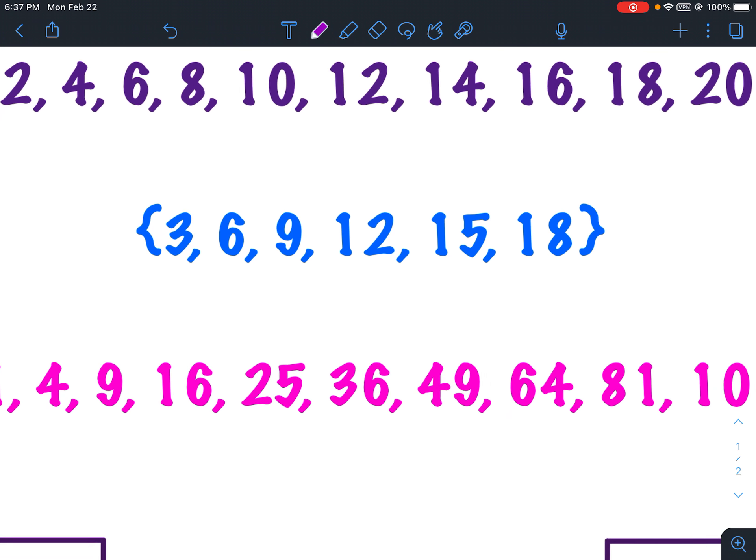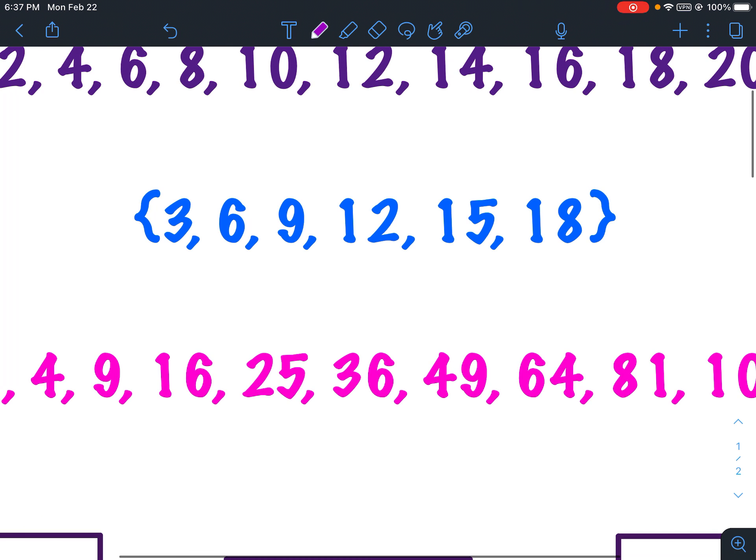Let's look at the next example of a set. We've got 3, 6, 9, 12, 15, 18. That is a set of your multiples of 3 up to 18. Again, that is their set of multiples of 3 up to 18.